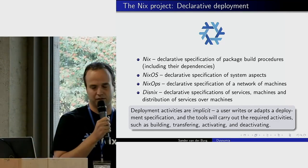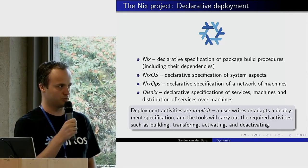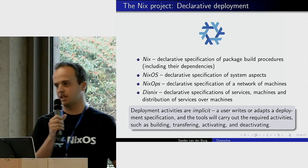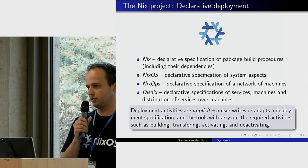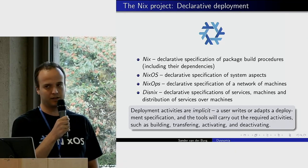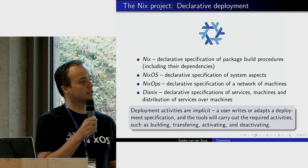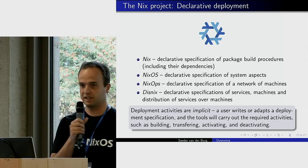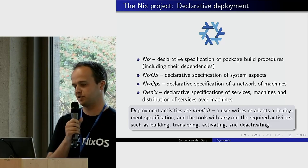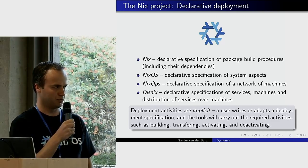NixOps extends this to networks of machines and can also provision virtual machines in the cloud. With Disnix you can use the same principles for service-oriented systems: provide a declarative specification of your services and how they're connected, a declarative specification of your machines, and the distribution of services over machines. With one single command line instruction you can deploy that entire system.